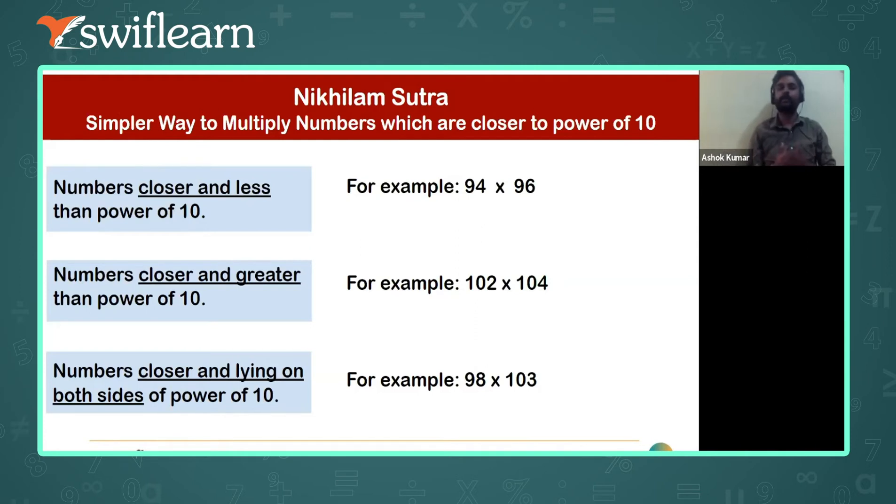So now here 94 is close to 100, even 96 is close to 100. That means it is less than 100. These problems are what? Less than 100.